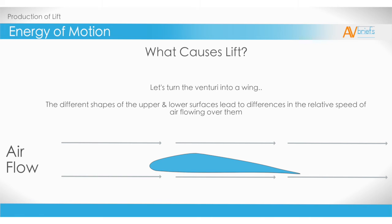The different shapes of the upper and lower surfaces lead to differences in the relative speed of air flowing over them. The air separates as it reaches the front of the wing. Part of it goes over the top, and part of it goes underneath the wing. The theory is that the air traveling over the top of the wing has to travel further than the air underneath the wing. This is due to the lump on top of the wing.